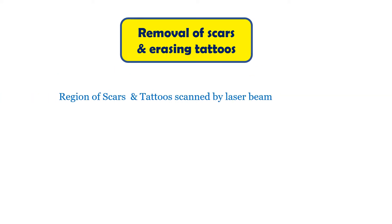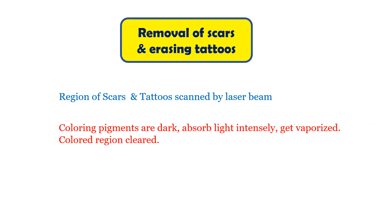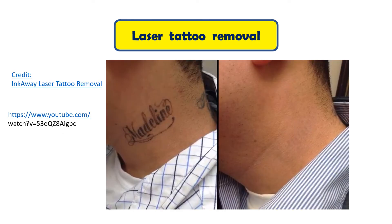Removal of scars and erasing of tattoos could be done by scanning the intended region of the skin by a laser beam. Both the scars and the tattoos stand out visually due to their heavily darkened regions. As the coloring pigments are dark, they absorb a lot more light from the incident laser beam and evaporate. Those of bigger size evaporate partially and the remaining part breaks down into small fragments that will be scavenged by the blood. Both events result in leaving behind a bleached skin. Here is a photograph as an example for the removal of a tattoo — you can see how the skin is bleached.